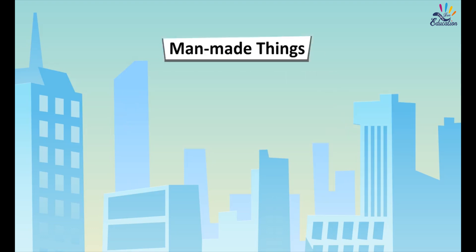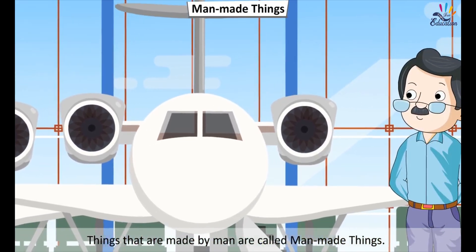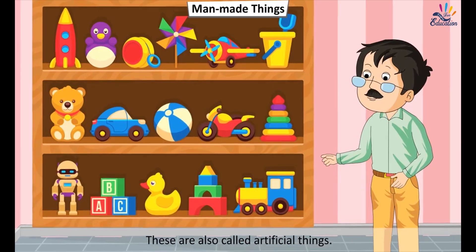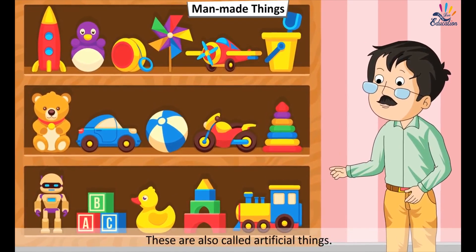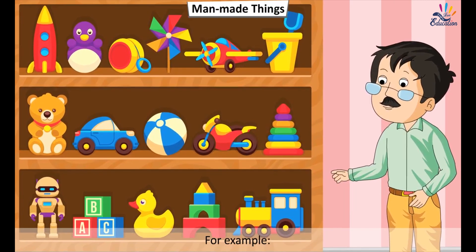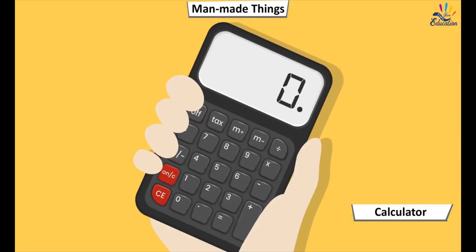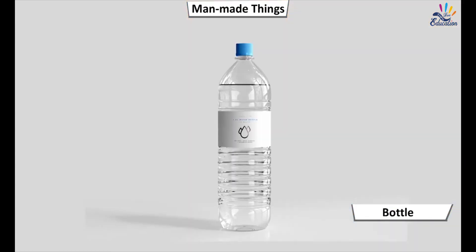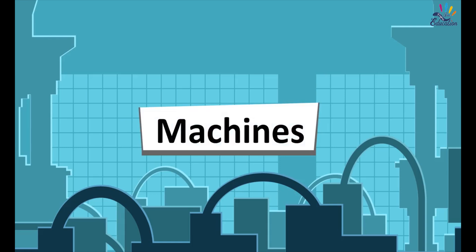Man-made Things: Things that are made by man are called man-made things. These are also called artificial things. For example, aeroplane, calculator, chair, bottle, book, machines.